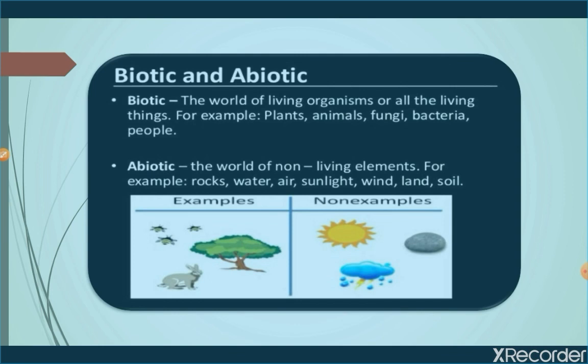Biotic environment: the word biotic means the world of living organisms. All living things — for example plants, animals, fungi, bacteria, and people — comprise the biotic environment. Abiotic environment: the world of non-living elements is known as abiotic environment. Rocks, water, air, sunlight, wind, land, and soil comprise the abiotic environment. Biotic and abiotic things co-exist in the environment.